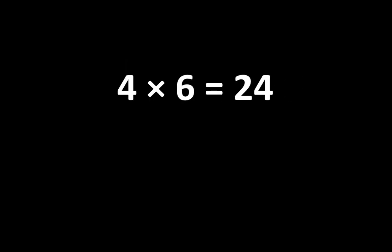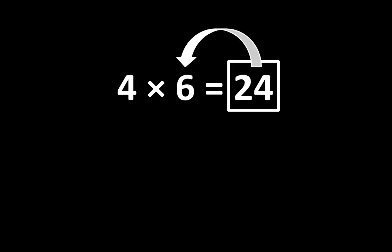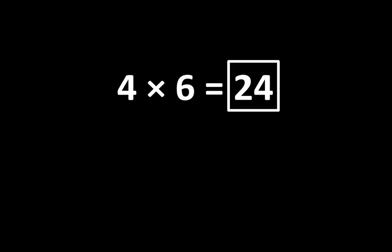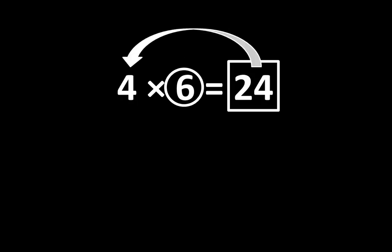When you examine 4 times 6 is equal to 24, you may notice that 24 is greater than 4, and 24 is also greater than 6. But how many times greater? 24 is 6 times greater than 4. And there's another connection: 24 is also 4 times greater than 6. As you can see, there are many relationships among these numbers.